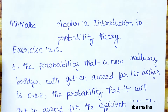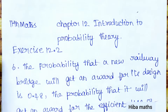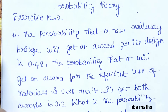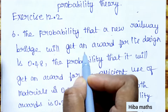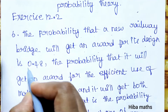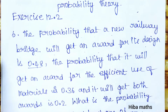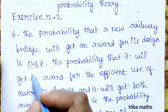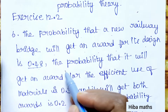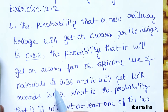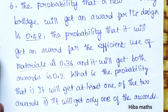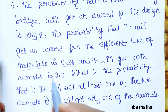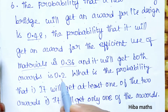Hello students, welcome to Hibamax 11th standard, Chapter 12: Introduction to Probability Theory, Exercise 12.2, sixth question. The probability that a new railway bridge will get an award for its design is 0.48, the probability that it will get an award for its efficient use of material is 0.36, and the probability that it will get both awards is 0.20.